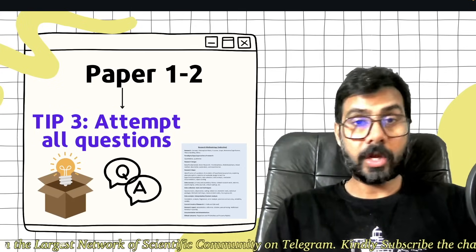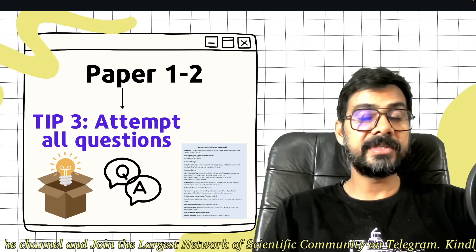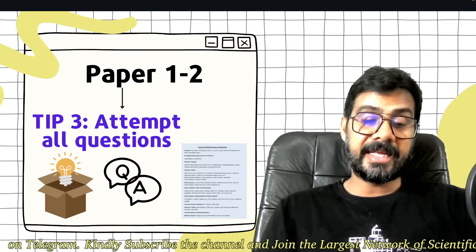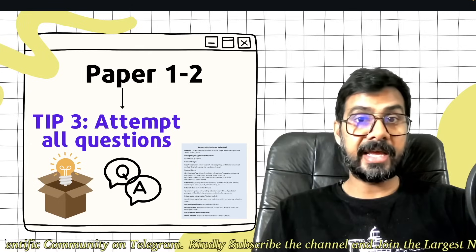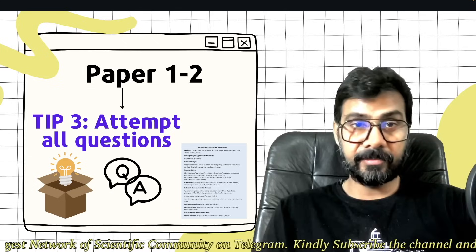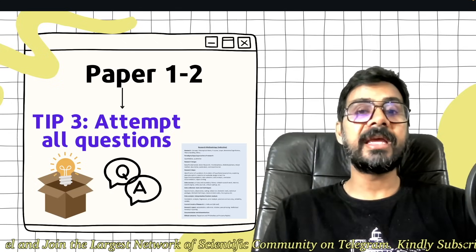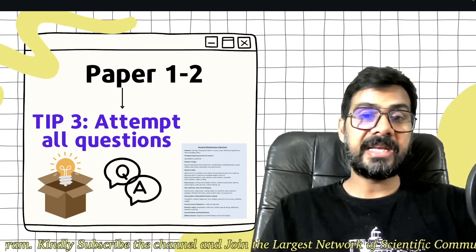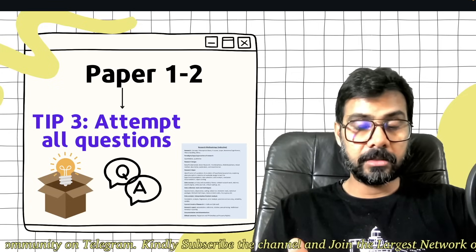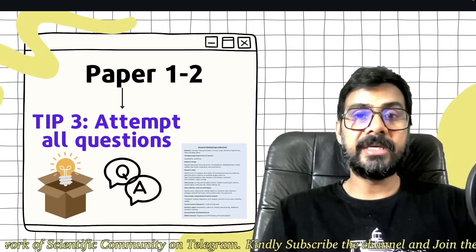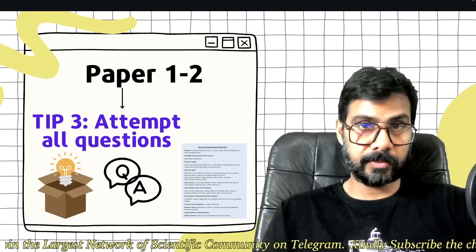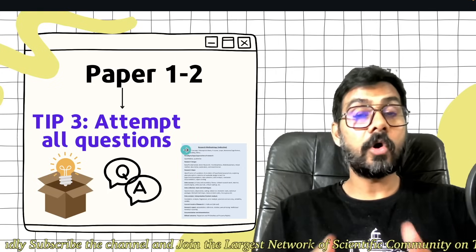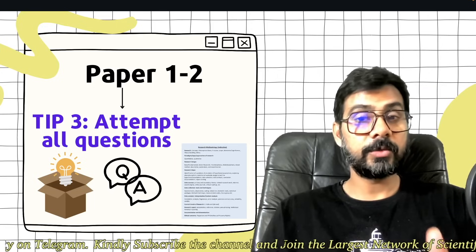Tip 3: Attempt all questions because there is a lot of confusion. On NTA's website, there is negative marking mentioned. But I'm telling you, when the first brochure came in August, they mentioned negative marking and that paper will be only in English. But if you check the revised corrigendum notice, they have clearly mentioned there is no negative marking. So you have to attempt all the questions, not roughly - with as much accuracy as possible.